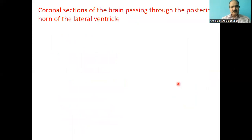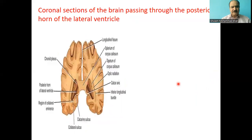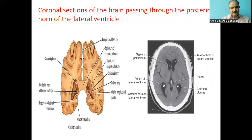This is a coronal section of the brain passing through the posterior horn of the lateral ventricle. You can see the tapetum and the calcar avis. An MRI image also demonstrates these features in section.